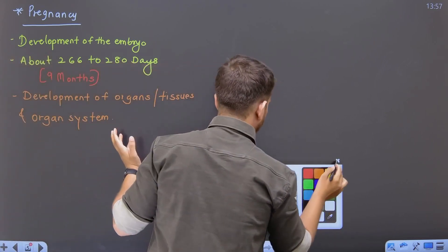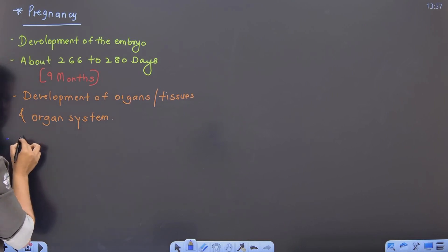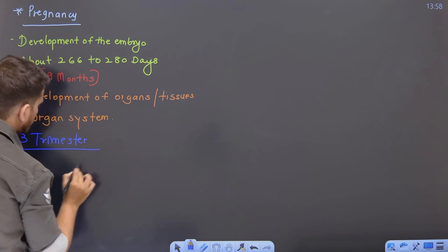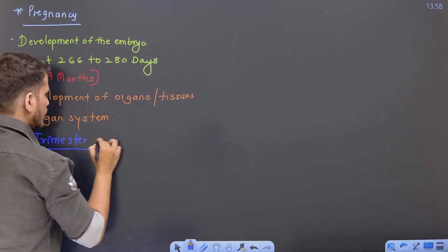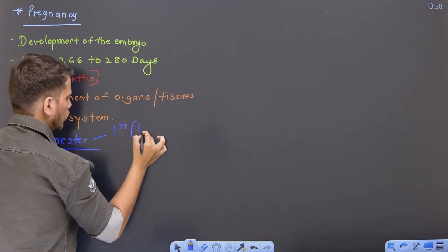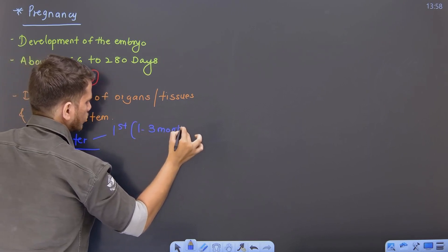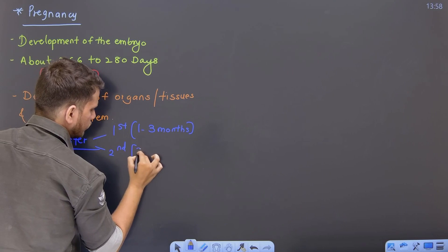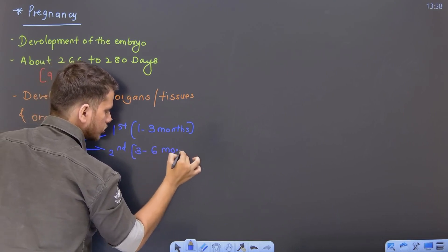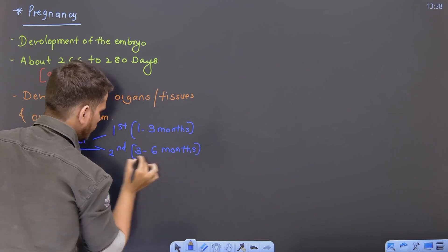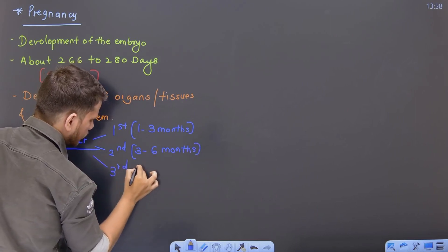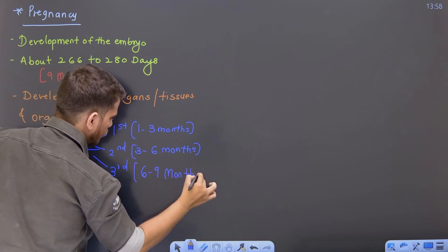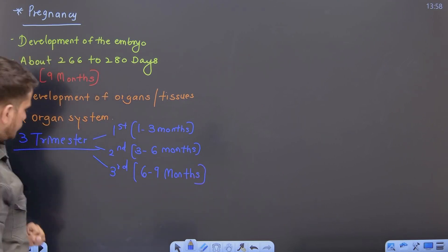Pregnancy jo hai, because it's a span of 9 months, it is divided into what is called as 3 trimesters. Students, trimester is a period of 3 months. So teen trimester hai, namely the first trimester, which is from 1 to 3 months. Then you have the second trimester, which is from 3 to 6 months. And the final trimester, which is the third trimester, from period of 6 to 9 months. So yeh poora time period humara teen trimester mein divide kia hai.